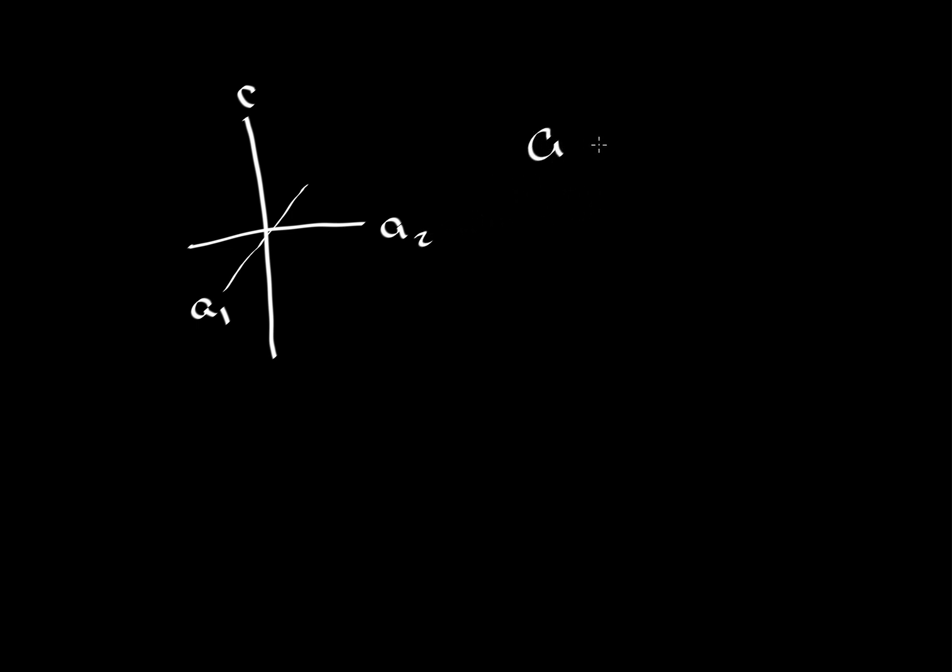So here, A1 is equal to A2, but these are not equal to C, and all of them are perpendicular. And that gives us the case of the tetragonal system.